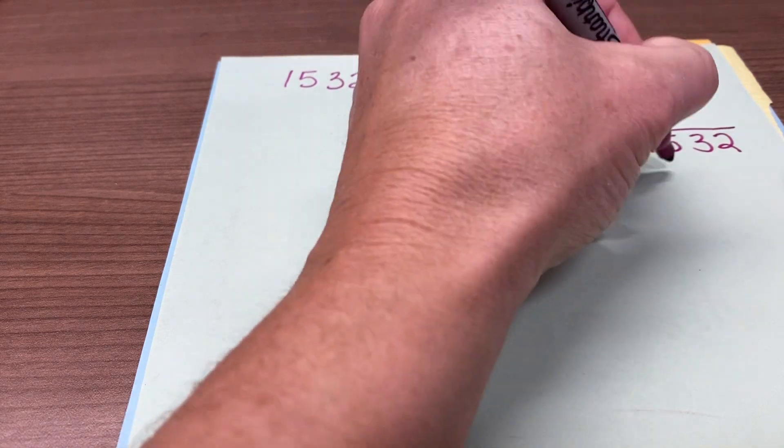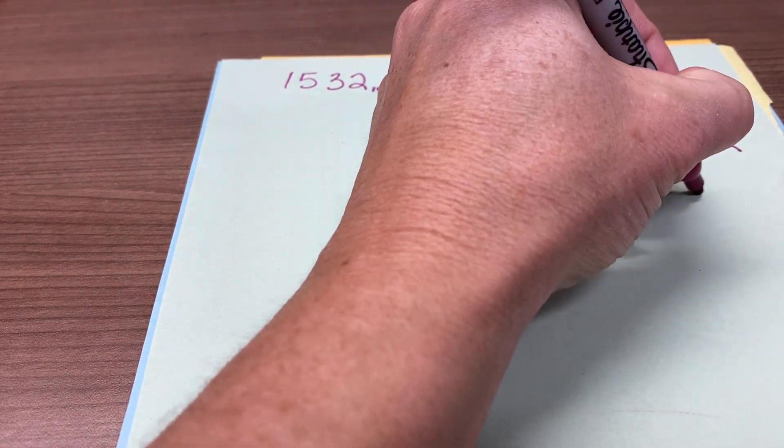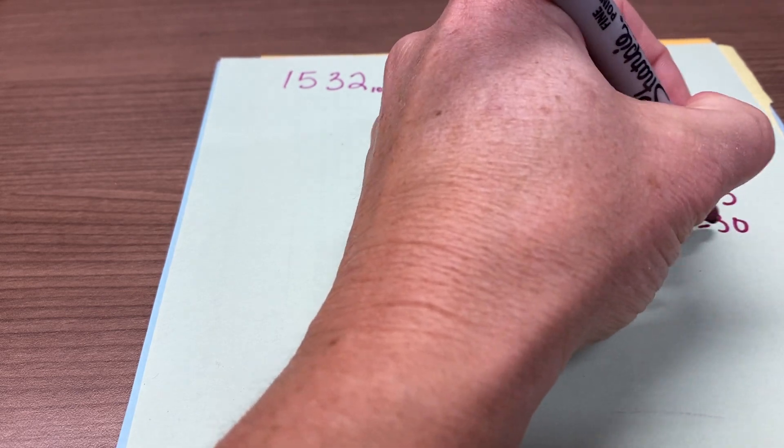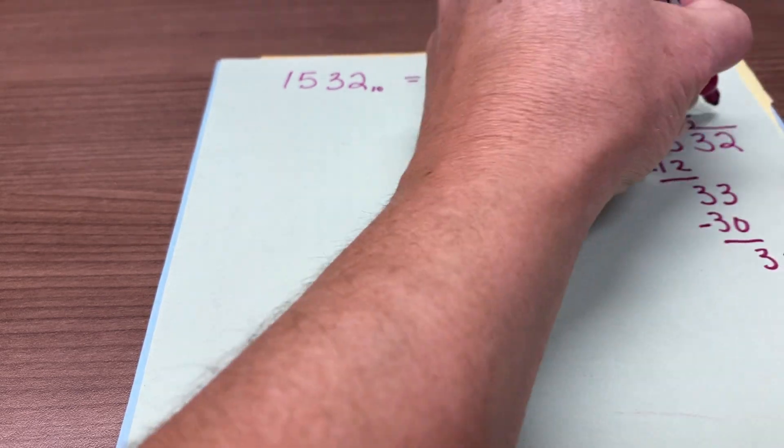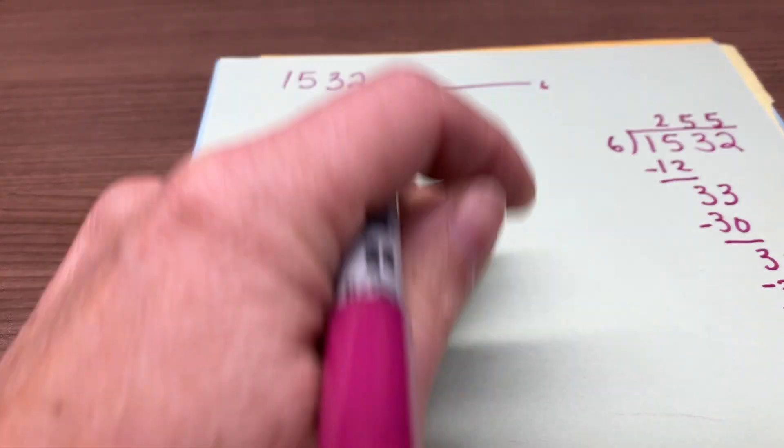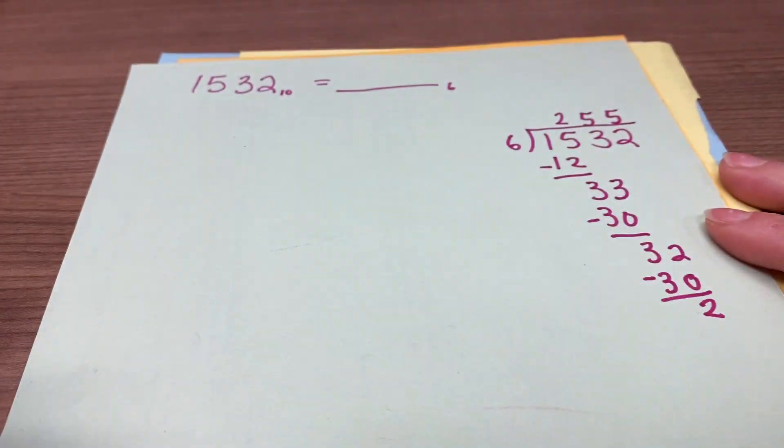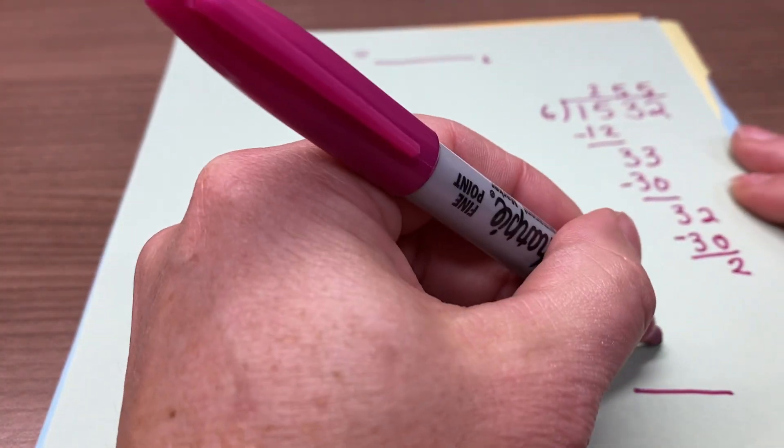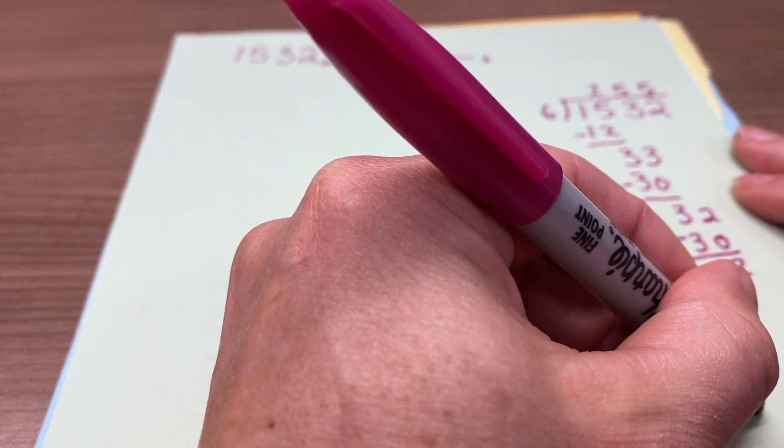And let's see, it goes in twice, it goes in 5 times, it goes in 5 times again. And then, remainder 2, that's what we're interested in, okay? 2 will go in the 1's place of our base 6 number.